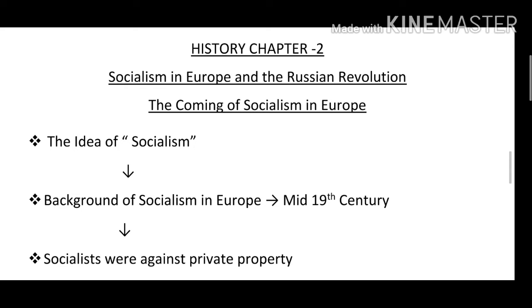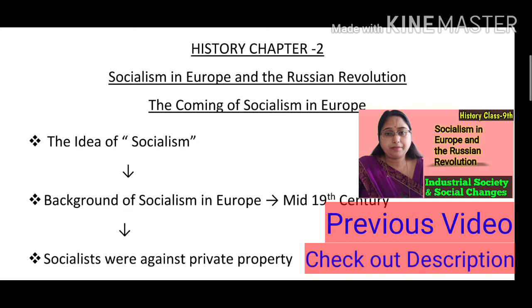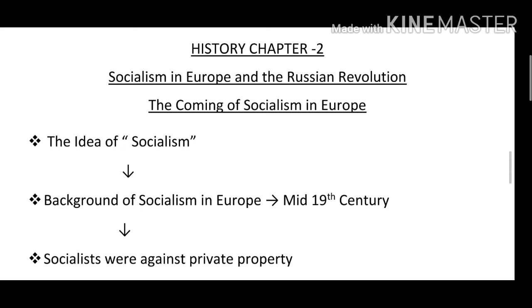In the previous video we discussed how industrial society came into existence, with its positive and negative aspects. Last video mein humne dekha tha kis tarike se industrial revolution hota hai aur ye apne saath positive aur negative dono effects leke aata hai. Humne ye bhi discuss kiya that liberals and radicals demanded changes in society and opposed the conservative regimes. At last, these liberals and radicals became revolutionary forces and abolished the conservative regimes. Today we will discuss how socialism came in Europe.